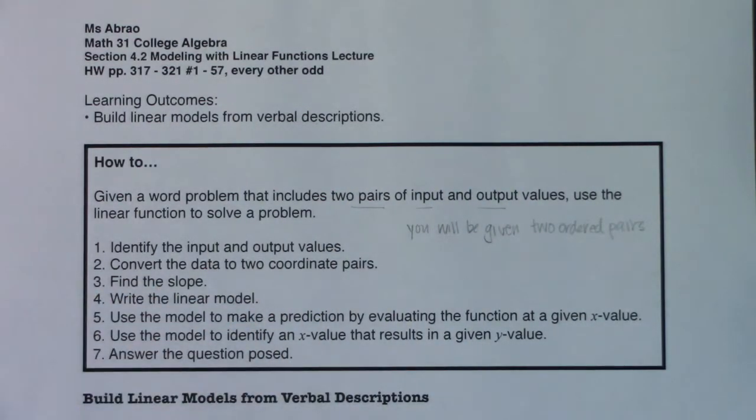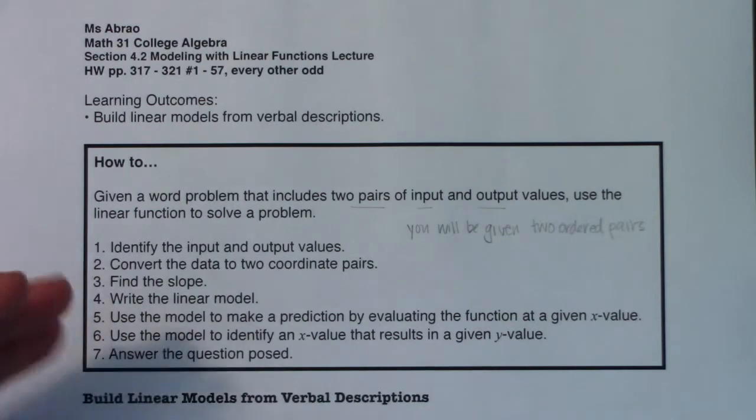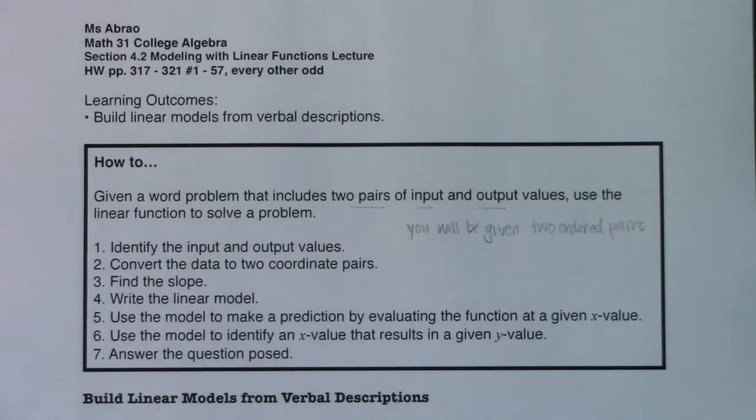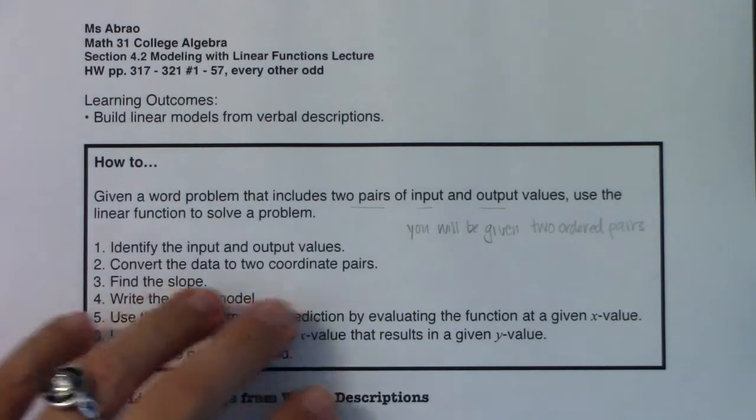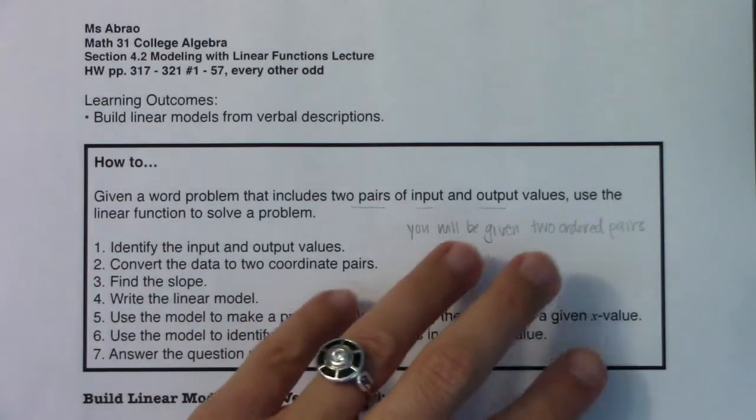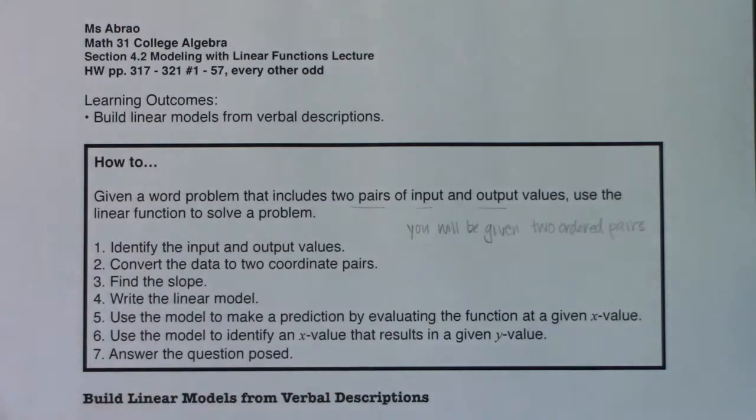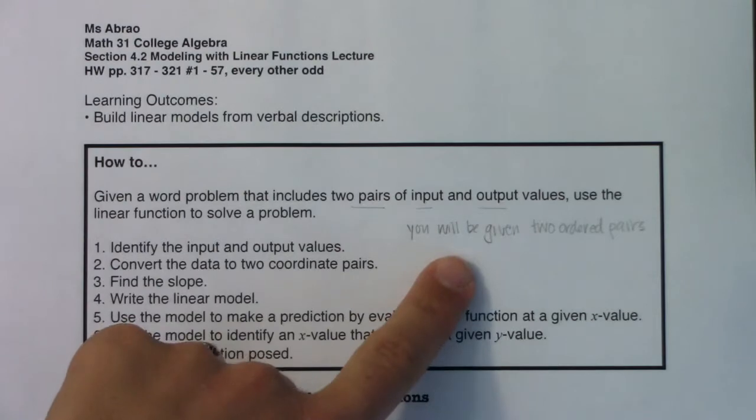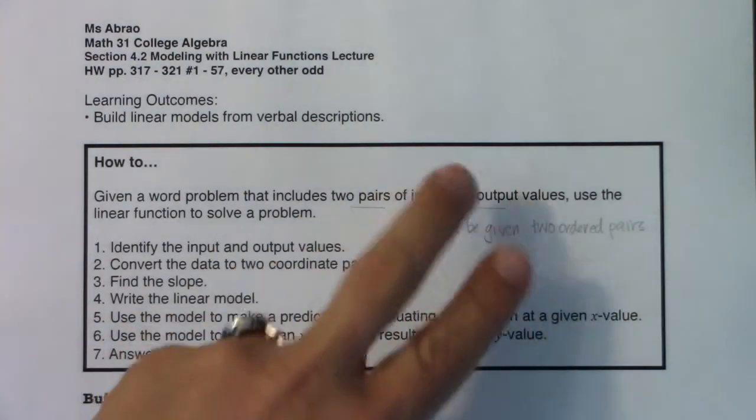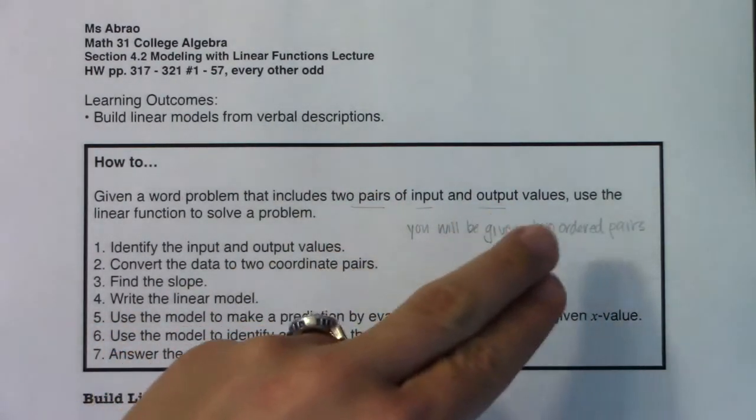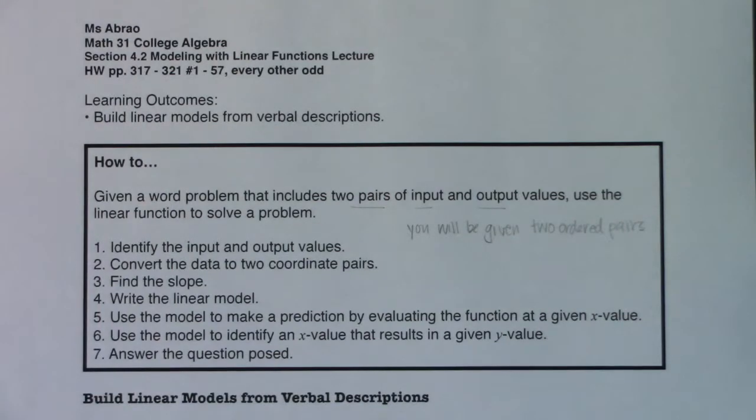you're going to have two pairs of input and output values, which means you will be given two ordered pairs. So we're going to go through many different examples in this section and in the next section. But for 4.2, there's a certain type of problem where you're given two ordered pairs in your word problem, and then these will be the steps to solve that word problem. And when we get to the next page, you'll be given one ordered pair and a slope. So sometimes you're given two points, sometimes you're given a point and a slope, and they have the same endgame, but just slightly different ways of getting there.